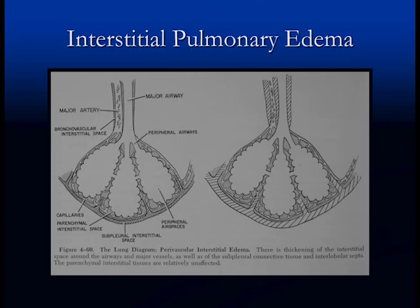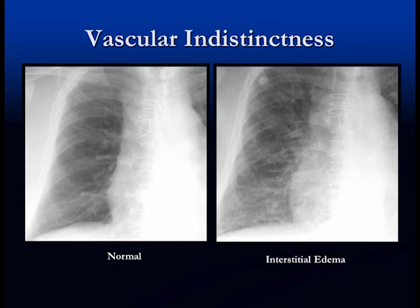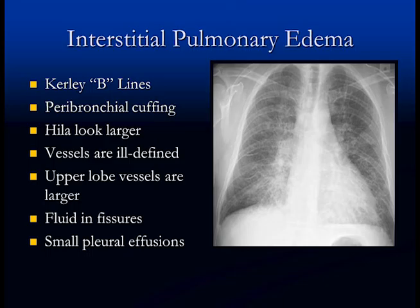You also get fluid in the subpleural interstitial space, which communicates with the intralobular septa forming a perpendicular pathway rising from the pleural surface. Fluid around the vessel makes it look larger and indistinct; fluid around the bronchus leads to peribronchial cuffing. Here is the same patient — normal on the left, interstitial edema on the right — the vessels look larger and they're ill-defined; you can't pick one vessel out over another. This is called perihilar edema.